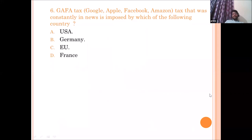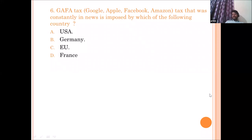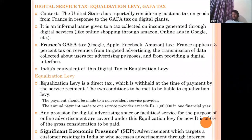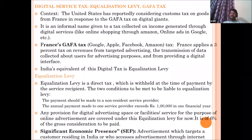The sixth question: GAFA tax — standing for Google, Apple, Facebook, and Amazon tax — was imposed by which country? The answer is France. France was the first country to impose this digital tax, creating major controversy because the US threatened to impose higher customs duties on French imports like wine in retaliation, turning it into a near trade war situation. The challenge with taxing digital companies is they don't need physical presence in the country where they operate or provide services.